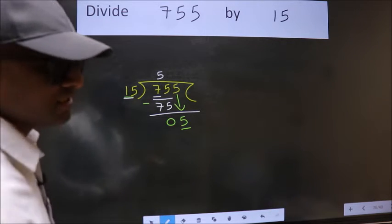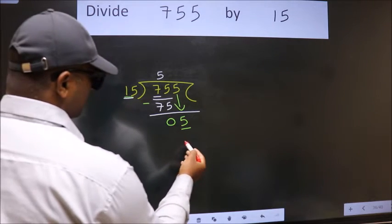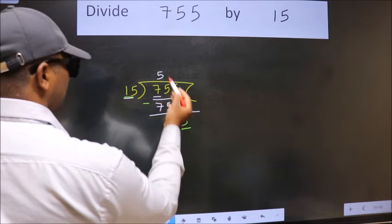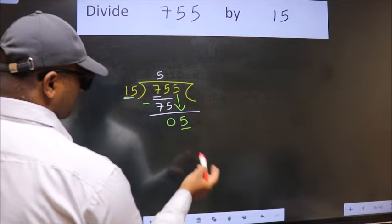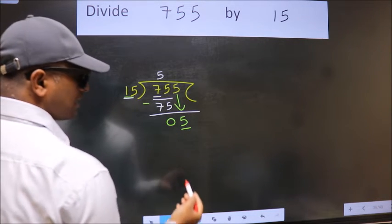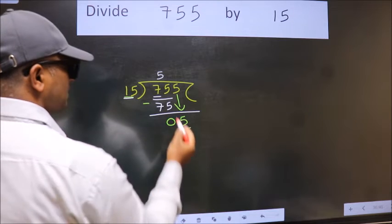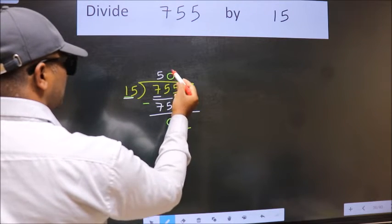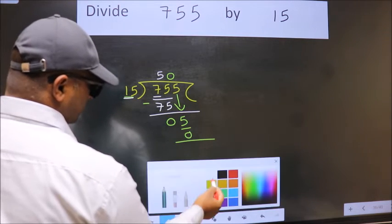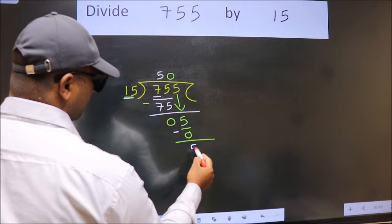Instead of that, what we should think of doing is, which number should we take here? If I take 1, we will get 15, but 15 is larger than 5. So what we do is we take 0 here. So 15 into 0, 0. Now we subtract. We get 5.